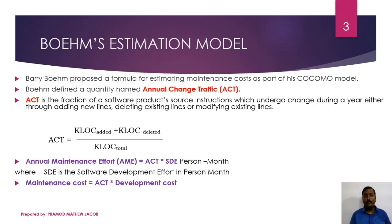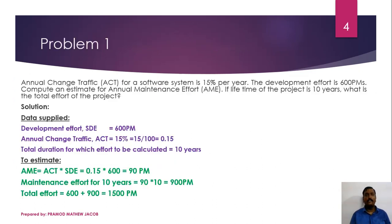Annual Maintenance Effort (ME) is equal to ACT multiplied by SDE, in person months, where SDE means the software development effort in person months. Maintenance cost is equal to ACT multiplied by the development cost of the software product.